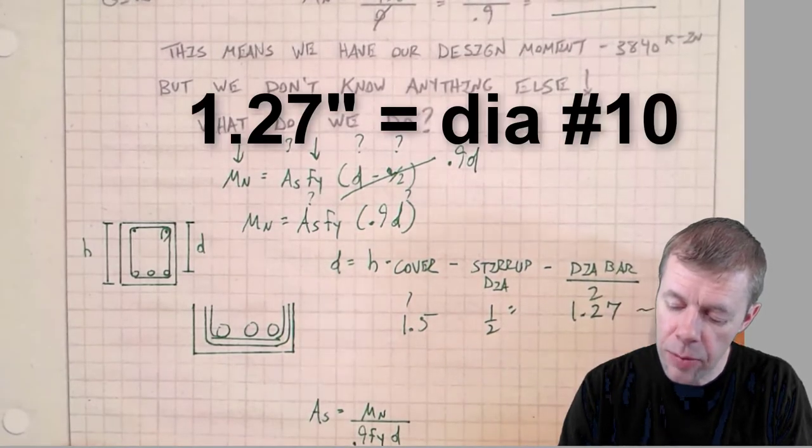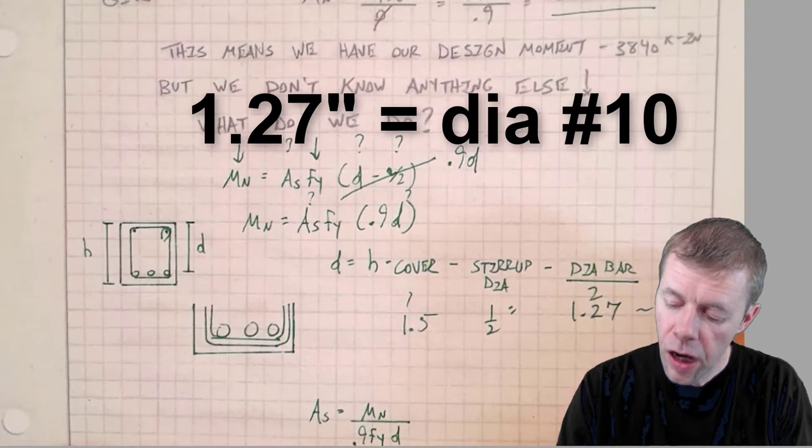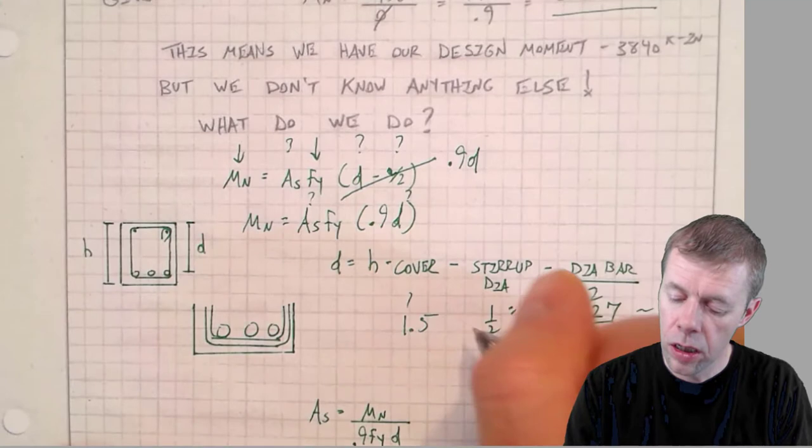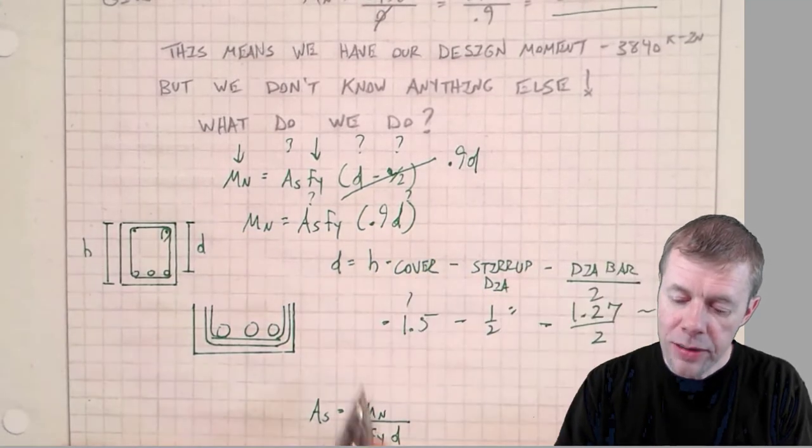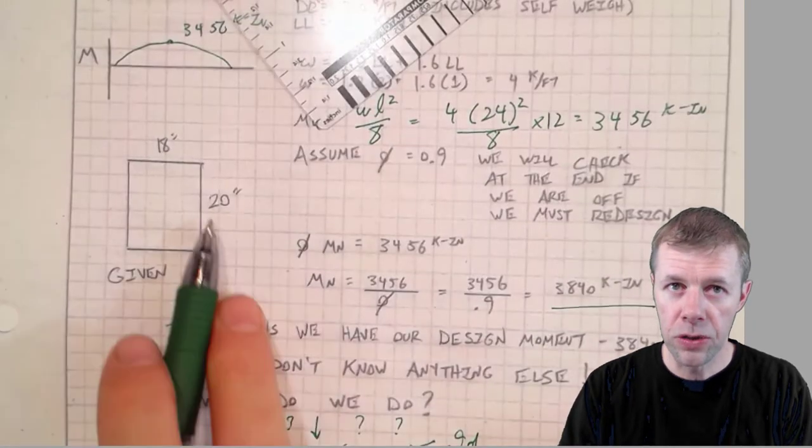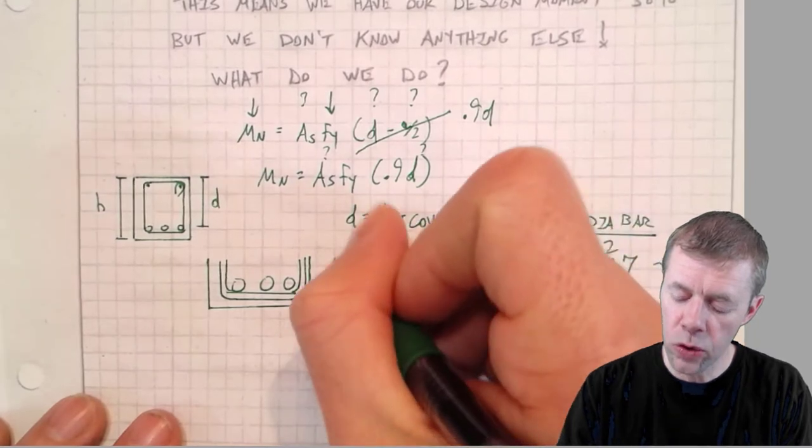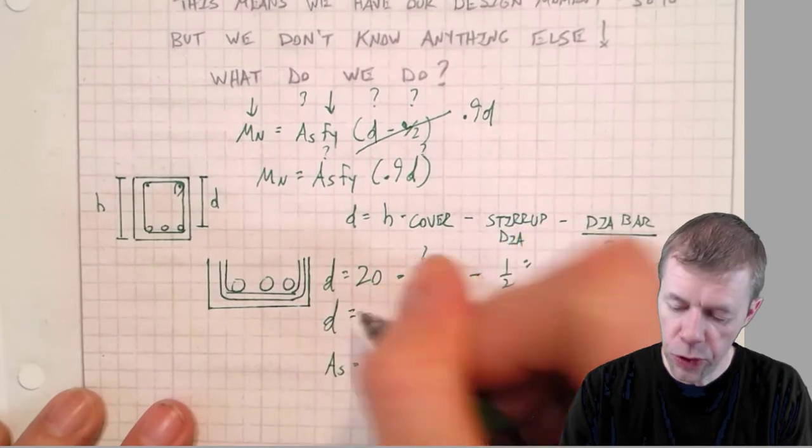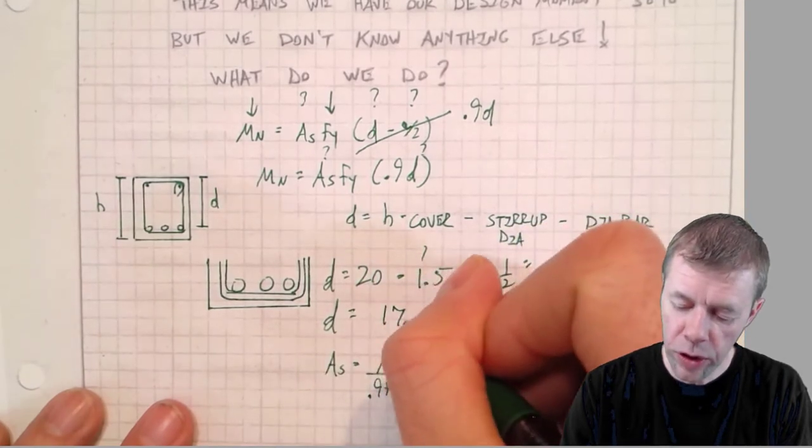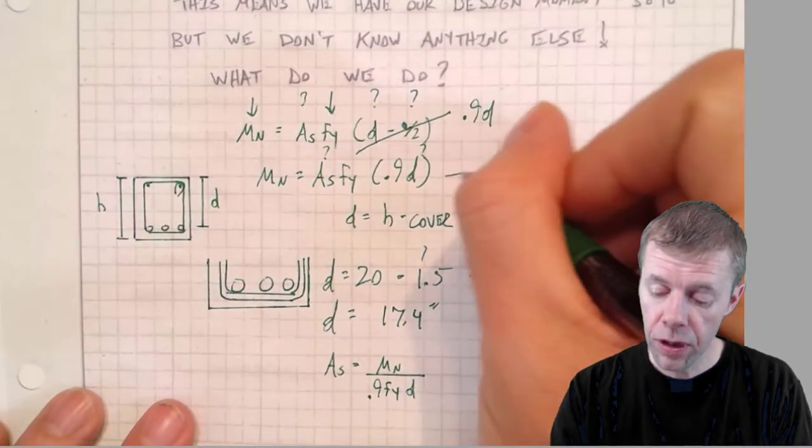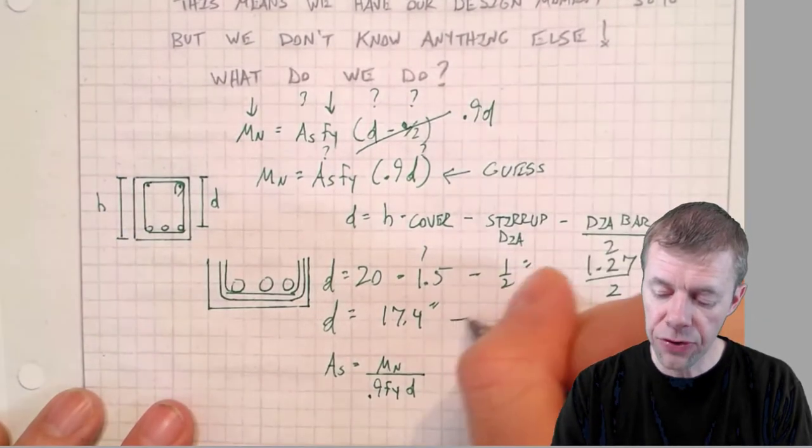I could pick a bigger bar if I wanted to, but a number 10 is a pretty good size, not too big, not too small, right in the middle. A number 10 bar is 1.27 inches diameter. So d equals 20 minus all of this, so d is equal to 17.4 inches.